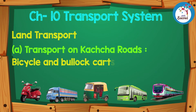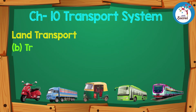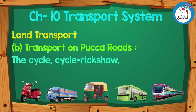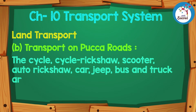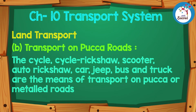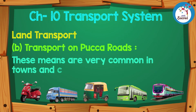Bicycle and bullock carts are the common types of vehicles in the villages. B: Transport on pakka roads — the cycle, cycle rickshaw, scooter, auto rickshaw, car, jeep, bus and truck are the means of transport on pakka or metal roads. These means are very common in towns and cities.